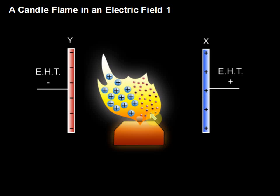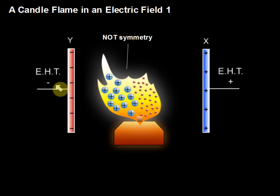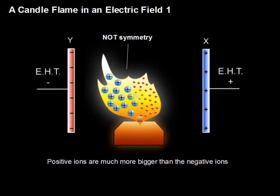You will find that the flame is no longer symmetrical — it tends to go to the left-hand side, toward the negative plate, compared to the right-hand side. Why? That is because the positive ions are much bigger than the negative ions. The negative charge is just electrons — small electrons.